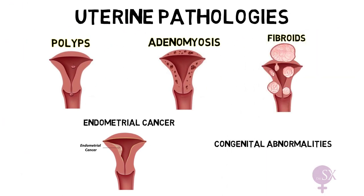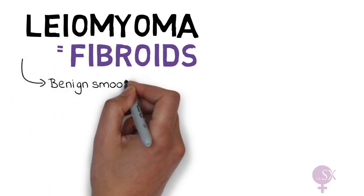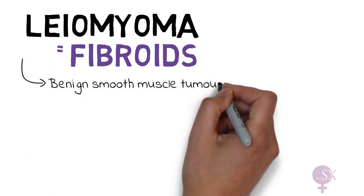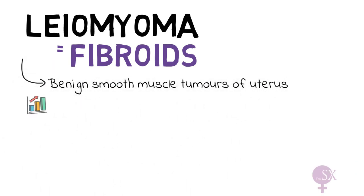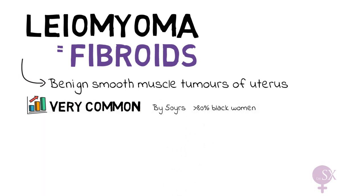Moving on to fibroids. These are also referred to as leiomyomas, but are more commonly referred to as fibroids. Essentially, they are benign smooth muscle tumors of the uterus. They are very common — by the age of 50, they will be present in more than 80% of Black women and around 70% of White women, so they are more common in Black women.